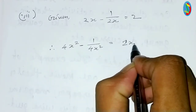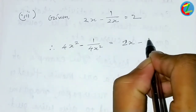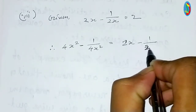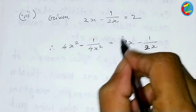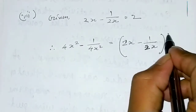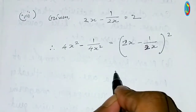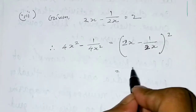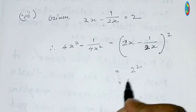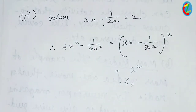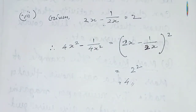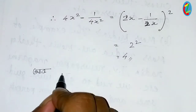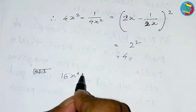I will see 4x² minus 1 by 4x². I will see 2x² is equal to 2x². I will see 4x² is equal to 2x², I will see 4x².